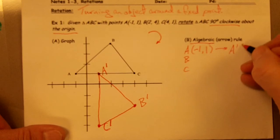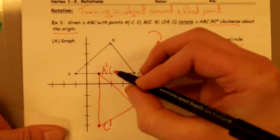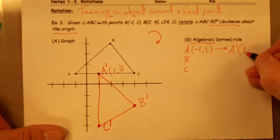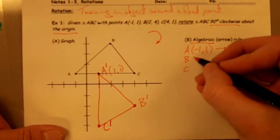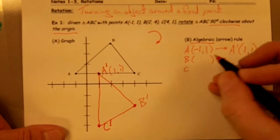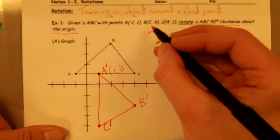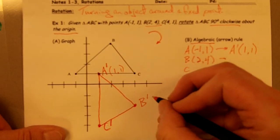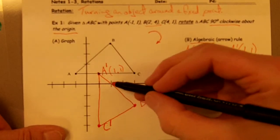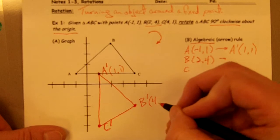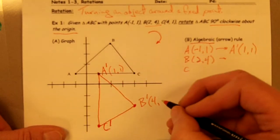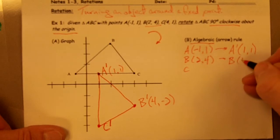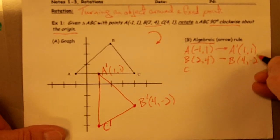And it gets transformed into A prime, which is at 1, 1. And point B, my point B is at 2 comma 4. And B prime, the coordinates of B prime, 1, 2, 3, 4, 1, 2, negative 2. So B prime is 4 comma negative 2.